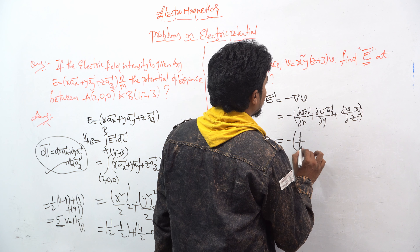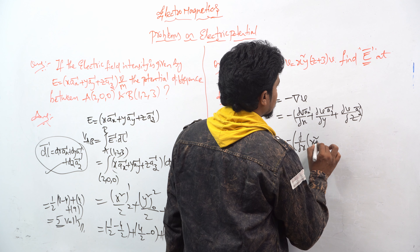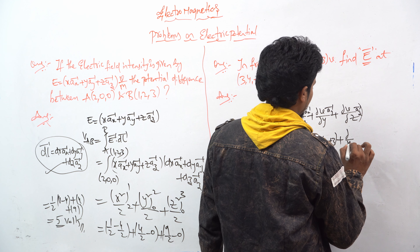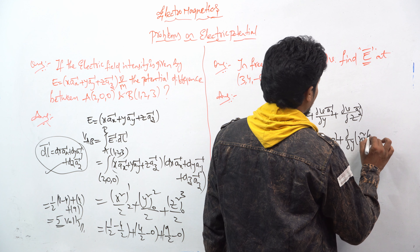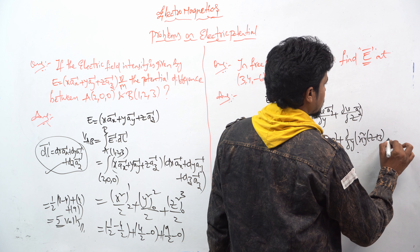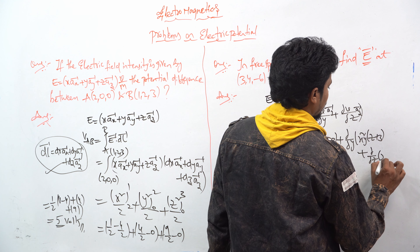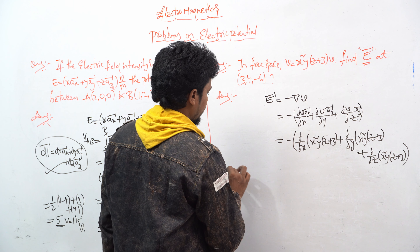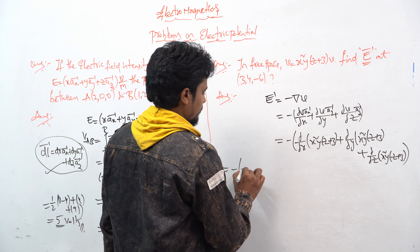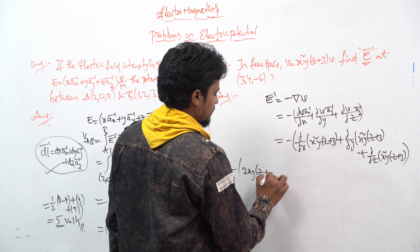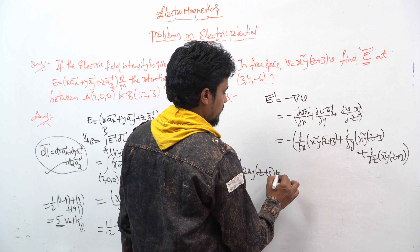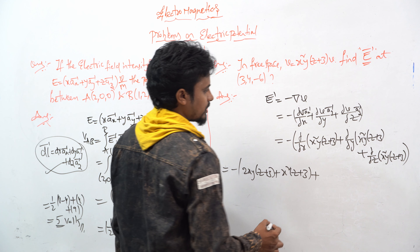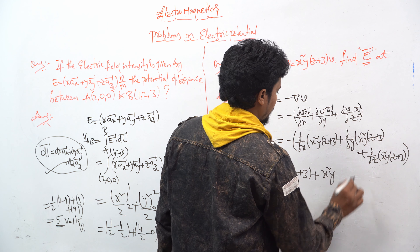Computing the partial derivatives: ∂V/∂x of (x²yz + 3) = 2xyz, ∂V/∂y of (x²yz + 3) = x²z + 3... wait, ∂/∂y gives x²z, and ∂/∂z of (x²yz + 3) gives x²y. So Ē = −(2xyz · ax̂ + x²z · aŷ + x²y · aẑ).